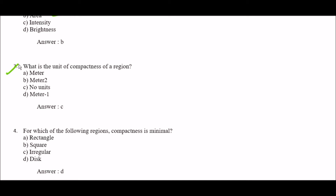Next question: what is the unit of compactness of a region? Option A: meter, option B: meter square, option C: no units, option D: meter minus one. The right answer is option C — no units.